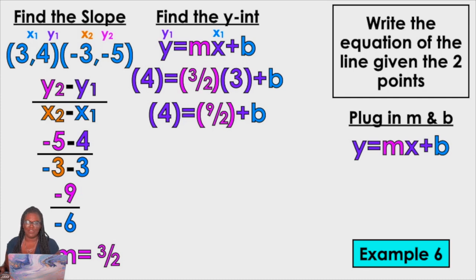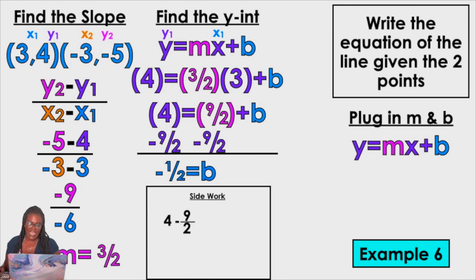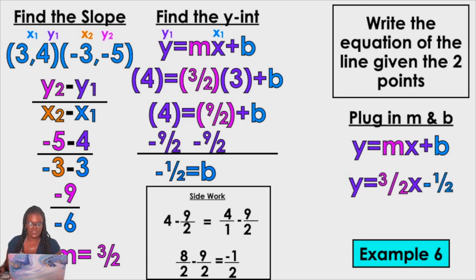The same steps apply. I need to subtract 9 halves. So I get 4 minus 9 halves, and that's negative 1 half. You've got to do some side work: 4 minus 9 halves is really 4 over 1 minus 9 over 2. I need like denominators to subtract fractions. 4 over 1 is the same thing as 8 over 2. So now: 8 minus 9 is negative 1 over 2 — negative 1 half. So Y equals 3 halves X minus 1 half. Sometimes you have to do the fractions.